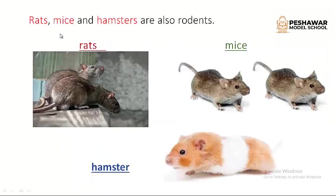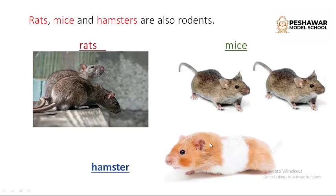There are other examples of rodents: rats, mice, and hamsters are also rodents. You have seen rats and mice in daily life — on the street, in homes, in schools. Hamster is something new because it is mostly found in European countries, but it is also a form of rodent because it has sharp teeth.